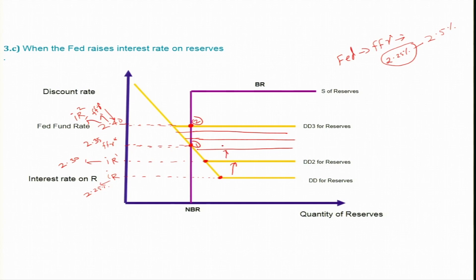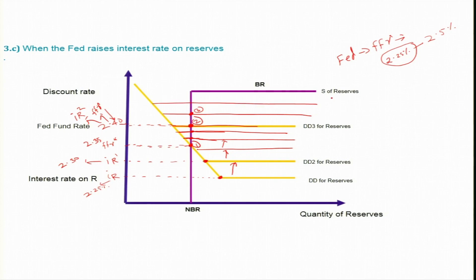If they keep on increasing the interest rate on reserves — suppose they reach IR2 = 2.40% — then the supply curve intersects the demand curve at a new point, and the new Fed fund rate also increases. Initially the Fed fund rate was, for example, 2.35%; now with IR2 the new Fed fund rate equals the interest rate on reserves, which is 2.40%. So the change in Fed fund rate depends on the position of the supply and demand curves.